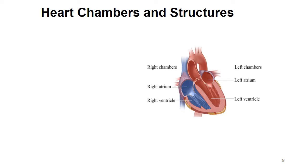Heart chambers and structures: let's look at a simplified picture of the heart. We're going to continue seeing this picture as we progress through the different structures, and they'll get more complex. We have four chambers: right atrium, right ventricle, left atrium, and left ventricle. The right side will look like it's on your left, but we're looking from the patient's perspective. The atria are on the top half of the heart and the ventricles are on the bottom half.